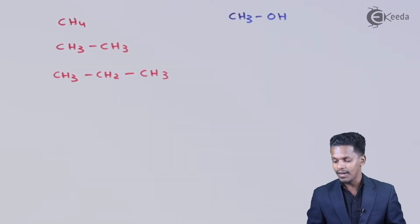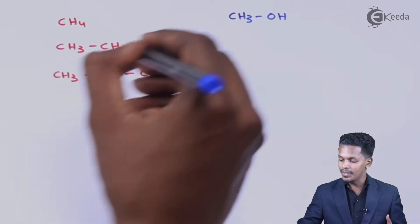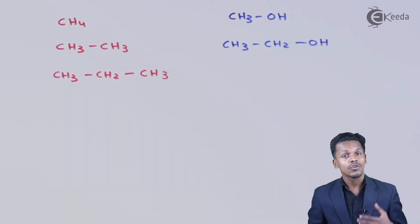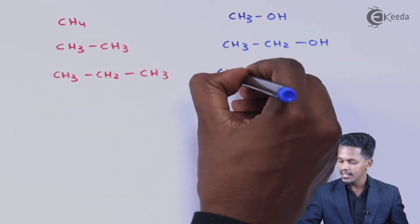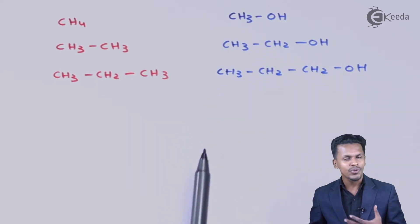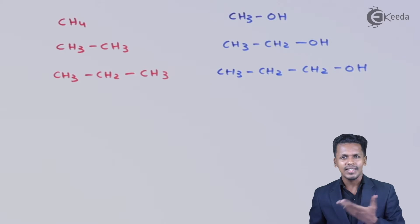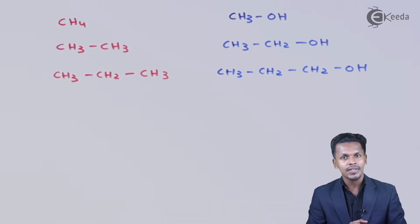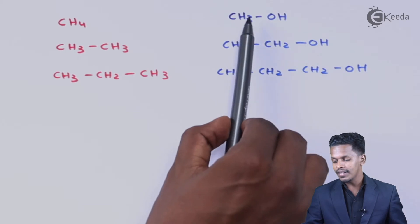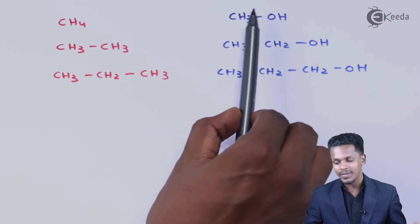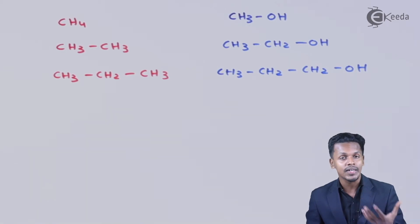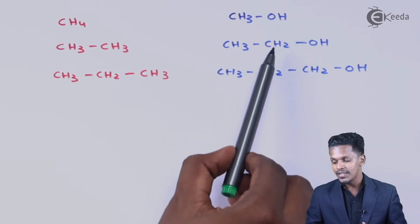The next member is ethanol, written as CH3CH2OH. The third member is propanol, written as CH3CH2CH2OH, and this continues with butanol, pentanol, hexanol, and so on. If you look at two consecutive members like methanol and ethanol, they are both alcohols because they share a common functional group, OH, but they also differ by CH2.